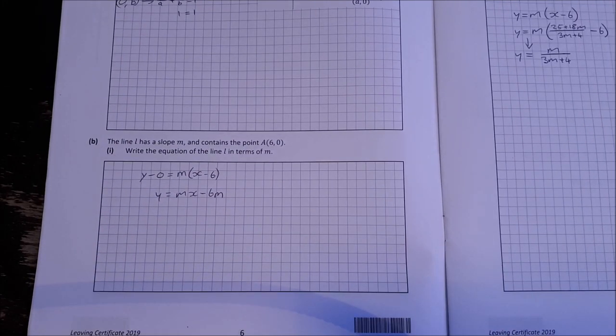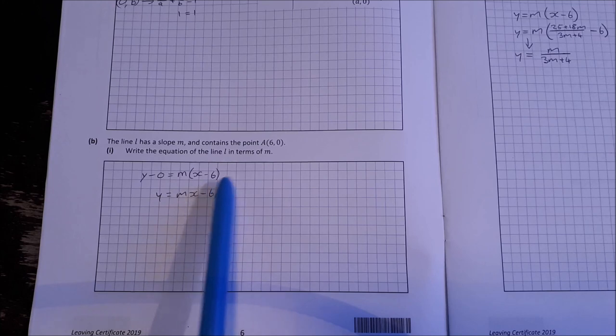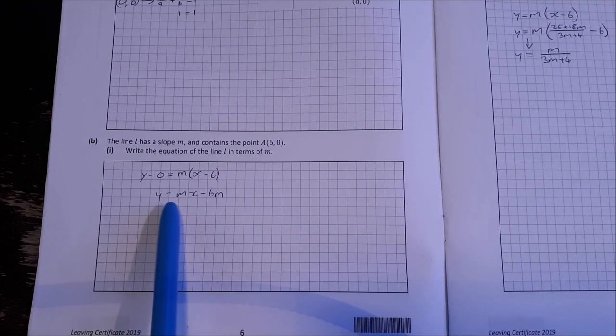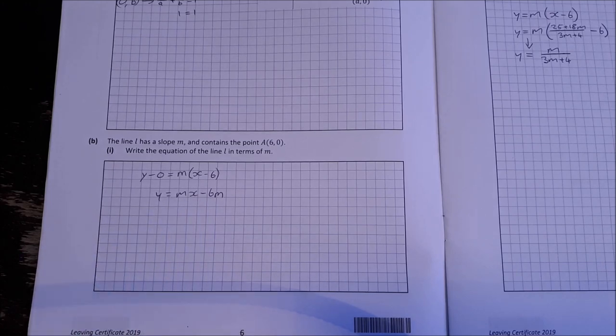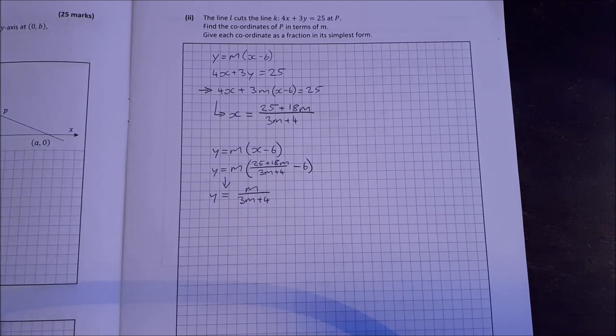The line L has a slope M and contains the point A which is six zero. Write the equation of the line L in terms of M. So y minus y1 equals M times x minus x1. Sub in 6 and 0 and M. You need to get Y equal to Mx minus 6M. The line L cuts K which is 4x plus 3y equal to 25 at P.